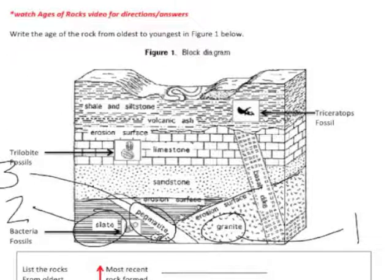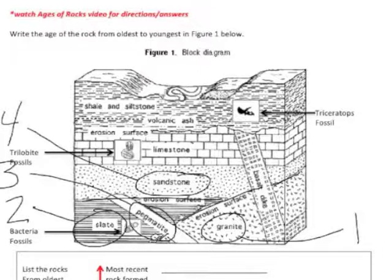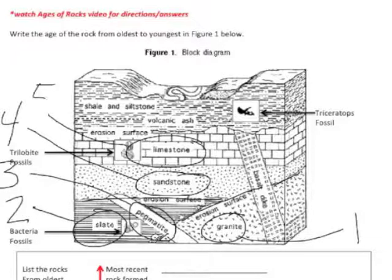And again, using the Law of Superposition, sandstone sits on top of the erosion surface, and so sandstone is going to be next in line at number 4. And then limestone sits on top of the sandstone, so limestone is going to be number 5.